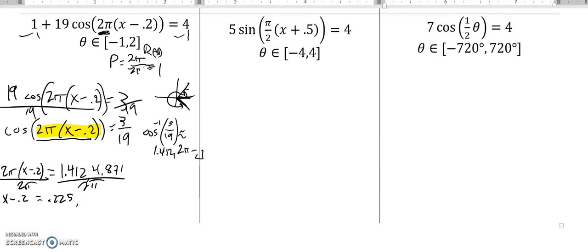And if I do that, notice now I have x minus 0.2 equals these both divided by 2π: 0.225 and 0.775. I got to add 0.2 now. And it looks like 0.425 and 0.975. So there's my primaries.